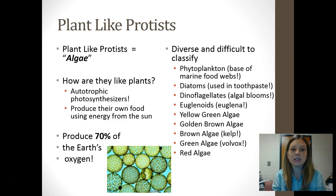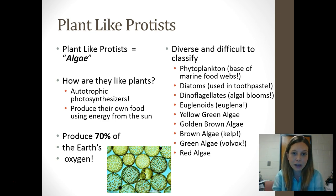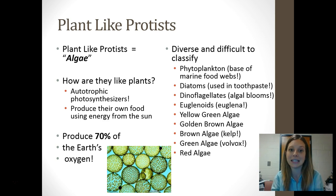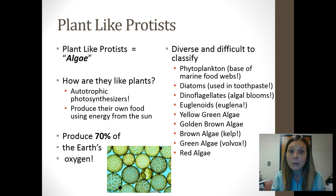Moving on from animal-like protists, we're going to talk about plant-like protists. Another name for plant-like protists is algae. When you're talking about algae, you're actually not talking about plants — you're talking about plant-like protists. What makes them like plants? They're autotrophic; they can make their own food through photosynthesis. Plant-like protists actually make about 70% of our Earth's oxygen. Think about that — not trees, not grass, not actual plants, but protists, algae, make up 70% of our planet's oxygen.